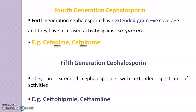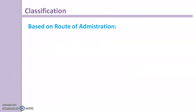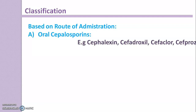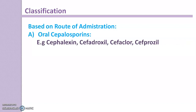All these generations are classified depending upon their spectrum of activity. The next way of classification is based on their route of administration. Cephalosporins administered by the oral route are called oral cephalosporins. Examples include Cephalexin, Cefadroxil, Cefaclor, and Cefprozil.